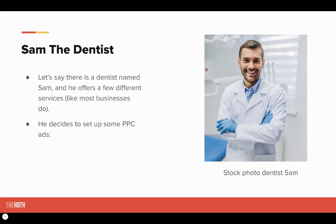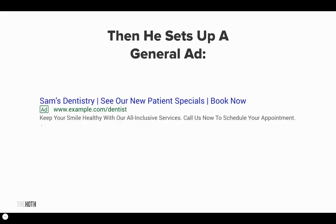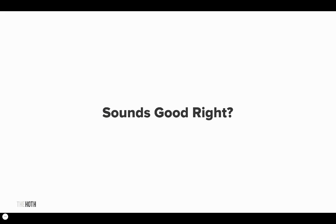An example of message match: we have Sam the dentist. He's a local dentist who offers a few different services like most businesses do, and he decides to set up some PPC for himself locally. Going through step-by-step, Sam loads all of his keywords into one ad group — Invisalign braces Tampa, porcelain veneers, dentist checkup, best dentists, root canals, dental implants, and a few more. Then he sets up a general ad: 'Sam's Dentistry — See our new patient specials, book now.' Everything looks good by the book, right?